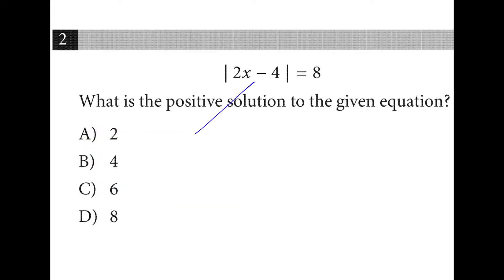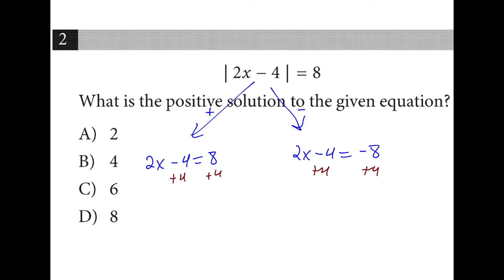We split this into the positive and negative solutions. On the left we have 2x minus 4 is equal to 8. On the right we have 2x minus 4 is equal to negative 8. We're going to add 4 to every side. We have 2x is equal to 12, and 2x is equal to negative 4. Then we're going to divide everything by 2.